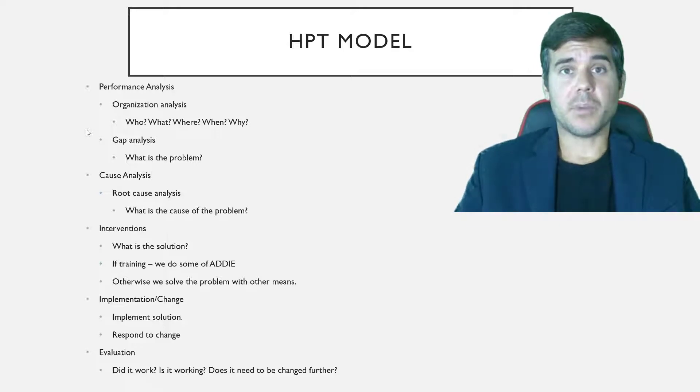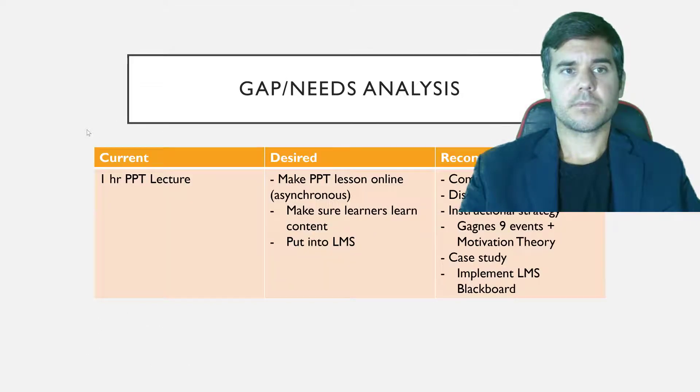Once we've identified our problem and we've come up with some solutions for it, we actually have our solutions, our client agrees, we start on our interventions. So what does that mean? That means if training was the problem, we do some form of ADDIE. Otherwise, we solve it with other means, like if it was a communication issue, we deal with the communication. Then we implement it. We implement the solution. If there's some change in the organization, we may be going through some, if it's a big change, we may be implementing some change strategies. And then we're going to evaluate it. Did it work? Is it working? Does it need to be changed further?